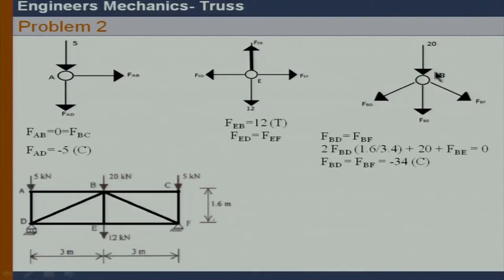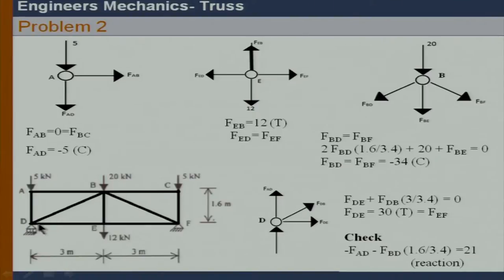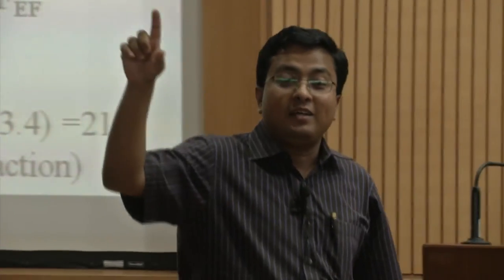Continuing joint by joint: FAB, FBC by symmetry, and FBE are known, so we are left with FBD and FBF. We solve for FBD and FBF at joint B. The last joint is joint D — DE is the only remaining unknown. Jumping to joint D and taking sum of forces along X equals zero, since FBD is known, FDE can be found. Checking using sum of forces along Y gives the reaction, which equals twenty-one — consistent with the symmetric loading.